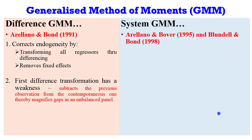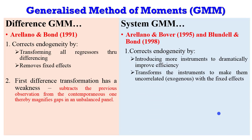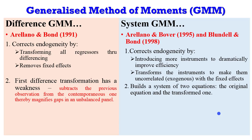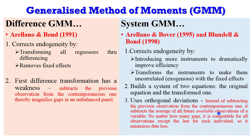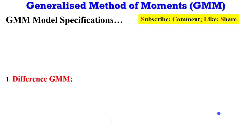System GMM was proposed by Arellano and Bover (1995) and Blundell and Bond (1998). It also corrects endogeneity but by introducing more instruments to dramatically improve efficiency. It transforms the instruments to make them uncorrelated — that is, exogenous — to the fixed effects. It builds a system of two equations: the original equation and the transformed equation. System GMM uses orthogonal deviations: instead of subtracting the previous observation, it subtracts the average of all future available observations, so gaps are computable for all observations except the last for each individual.